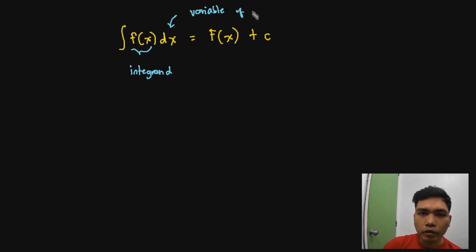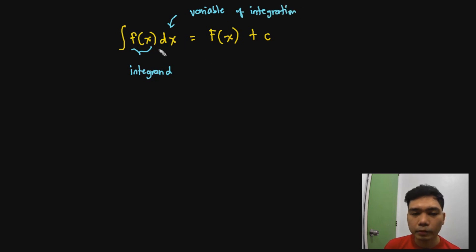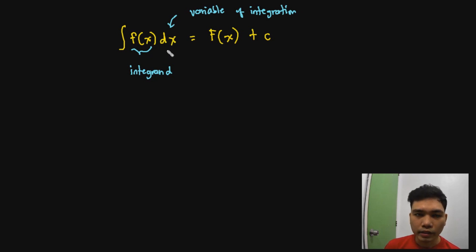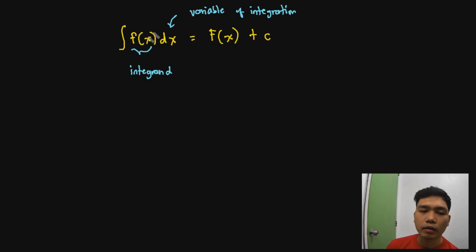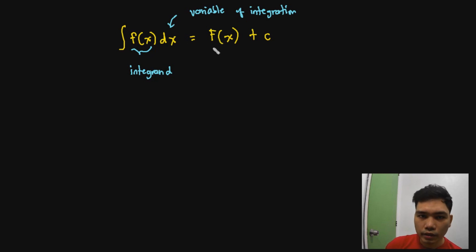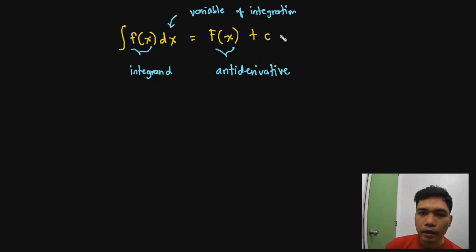The variable of integration is an important part of our integral expression because it tells us the infinitesimal change of that certain function, and that is the basis of our integration process. This capital F of x is what we call the antiderivative — that's the answer when you try to integrate the expression. And then this C is what we call the constant of integration.